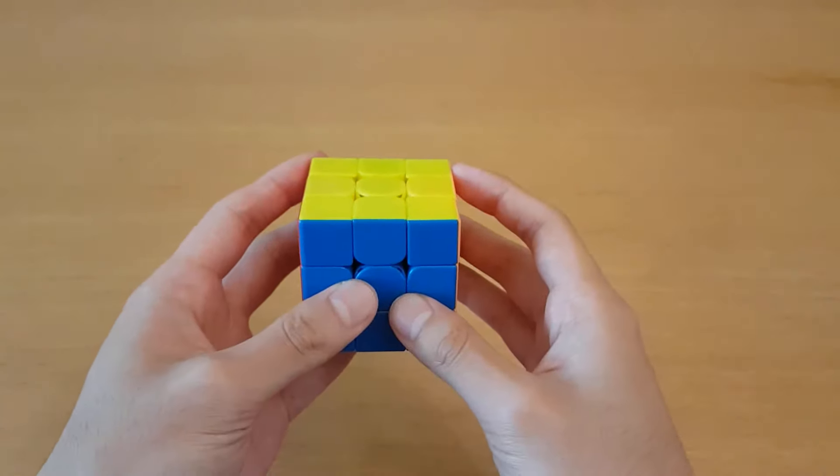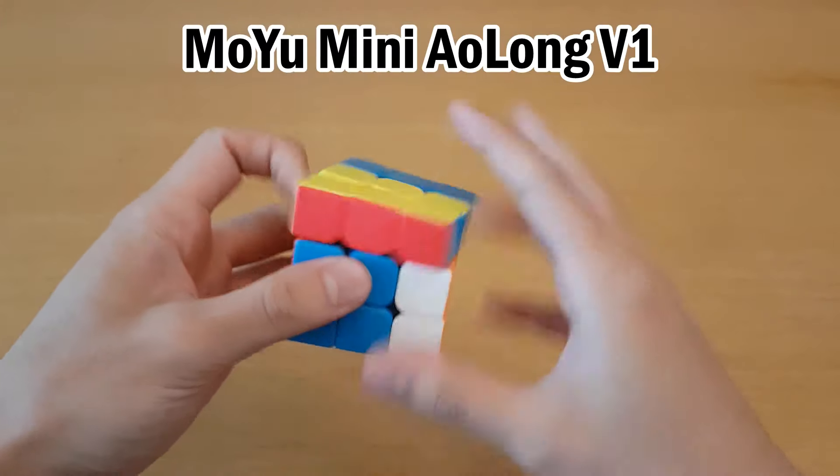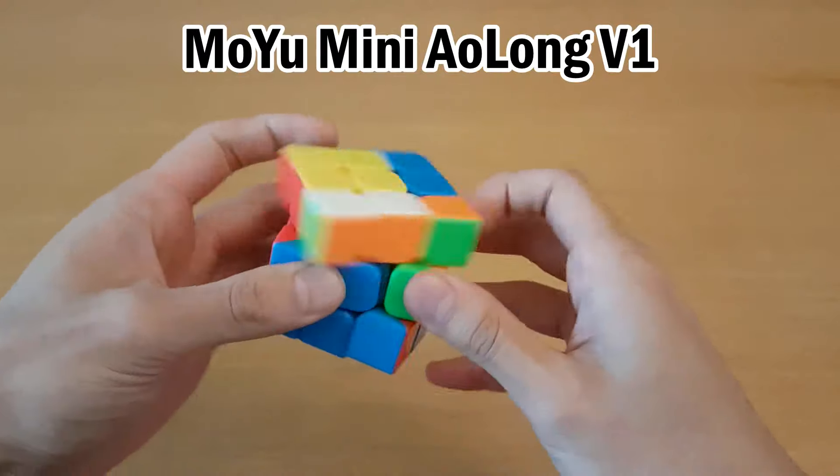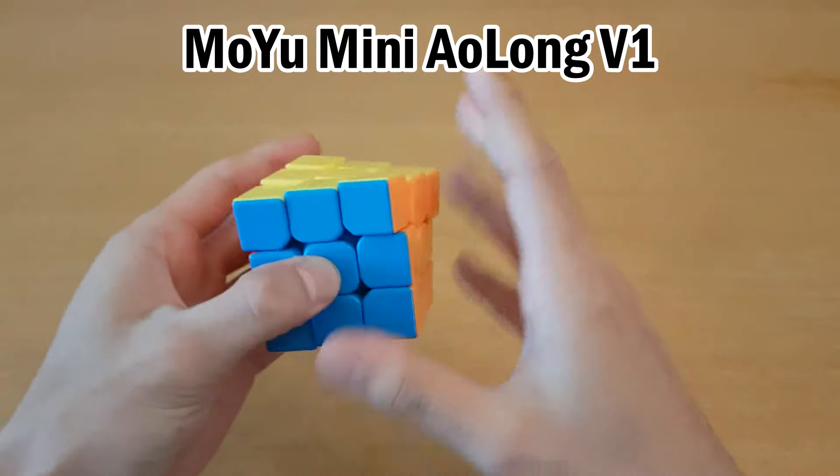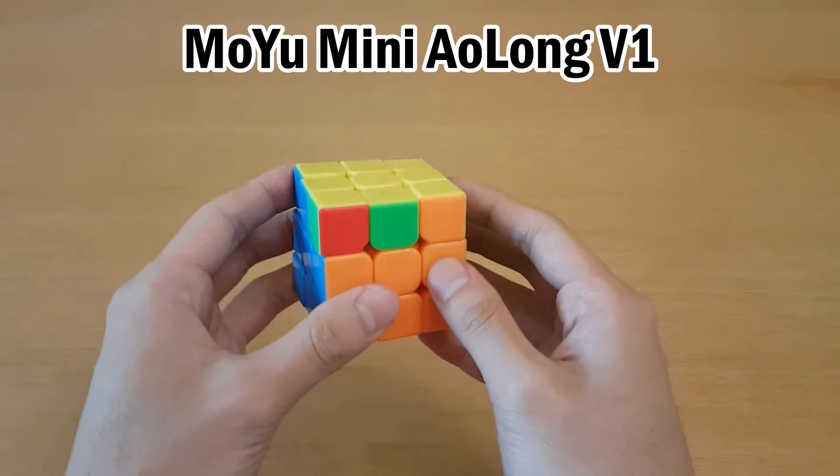And that changed when better cubes came out. Here is an AoLong V1. So I'm going to try this algorithm now. It's actually a lot harder to do this, and I can see why I would have preferred the standard algorithm, because it's just much more consistent.